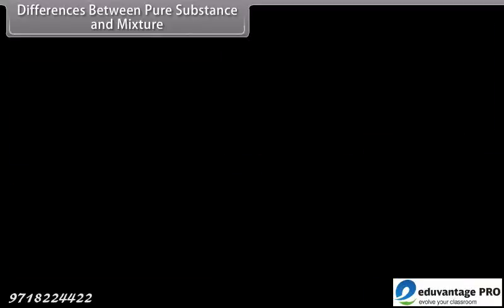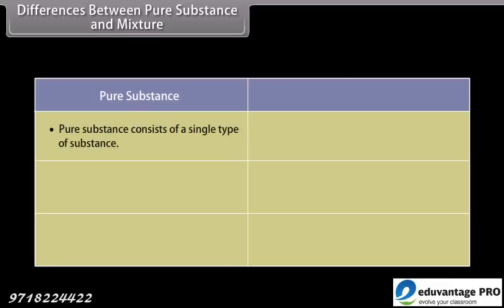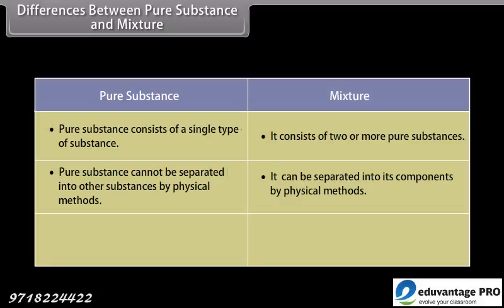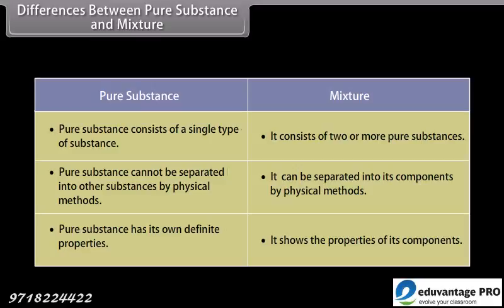Differences between pure substances and mixtures: A pure substance consists of a single type of substance, whereas a mixture consists of two or more pure substances. A pure substance cannot be separated by physical methods, but mixtures can be separated into their components by physical methods. A pure substance has its own definite properties, while a mixture shows the properties of its components.